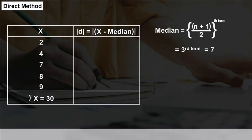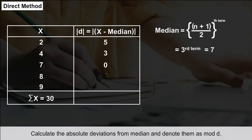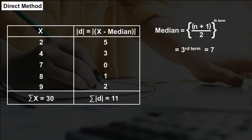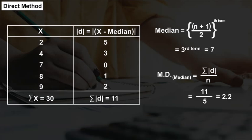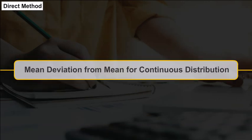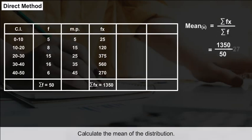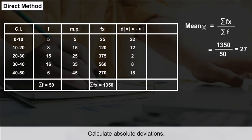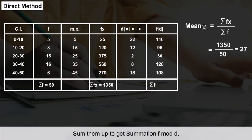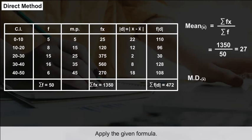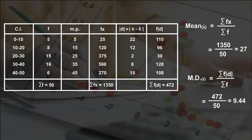Mean deviation from median for ungrouped data: calculate the median, then calculate the absolute deviations from the median (denoted |d|), and find their average. For a continuous distribution, calculate the mean, calculate absolute deviations, multiply each by its frequency to get f|d| values, sum them to get Σf|d|, and apply the formula: Mean Deviation = Σf|d| / Σf.